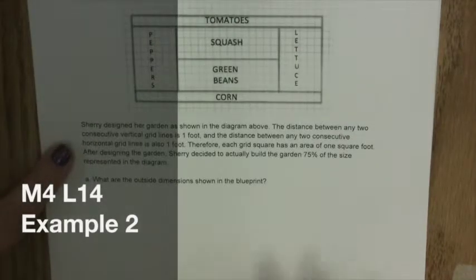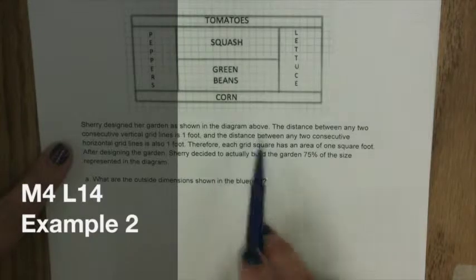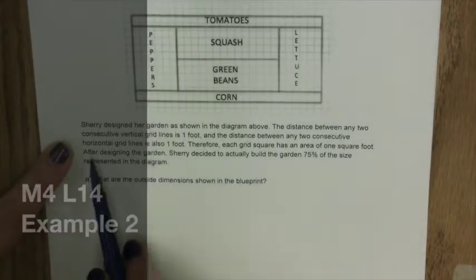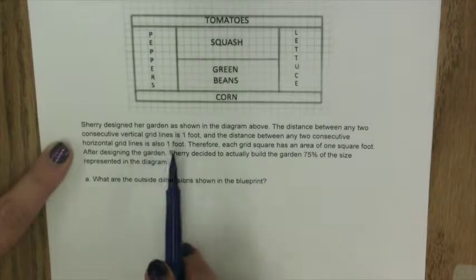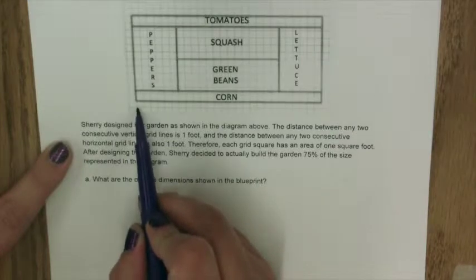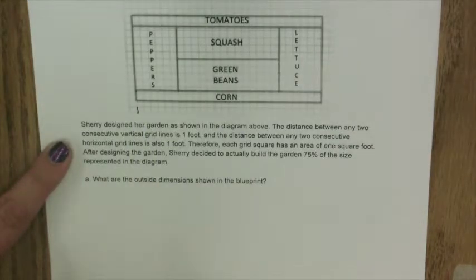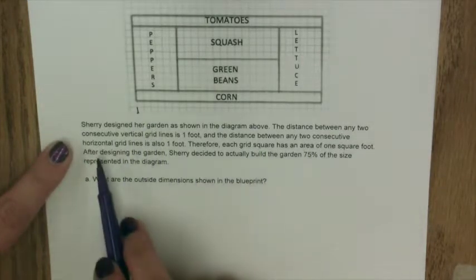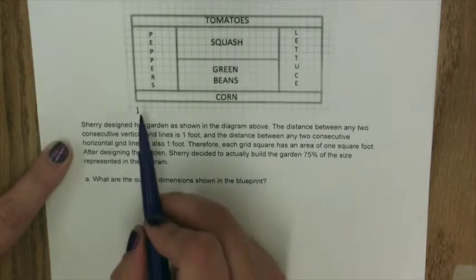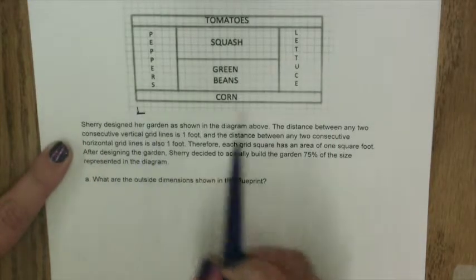Example 2. Sherry designed her garden as shown in the diagram above. The distance between any two consecutive vertical grid lines is one foot, meaning the distance here in one box is one foot, and the distance between any two consecutive horizontal grid lines is also one foot, so it would be here.